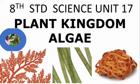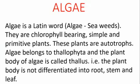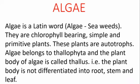Hello students, welcome everyone. Today it's tender science subject, Unit 17, Plant Kingdom, topic: Algae. Algae is a Latin word meaning seaweeds. In water-stagnant places we can see green colored small plants — that is Algae. They are chlorophyll-bearing, simple and primitive plants. These plants are autotrophs, meaning they prepare their own food by the process of photosynthesis.